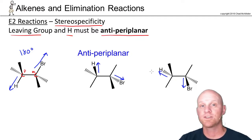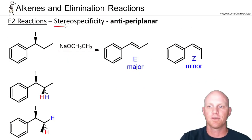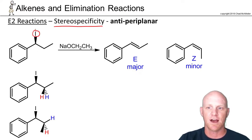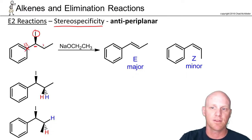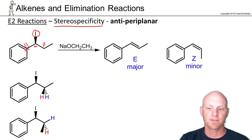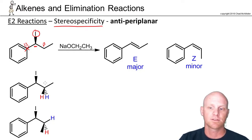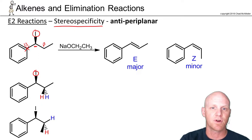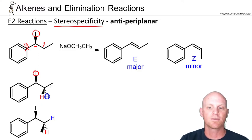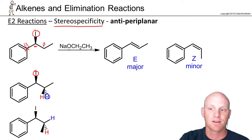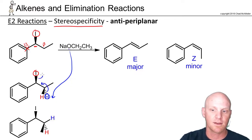This will have some profound effects on which alkenes we can form when E and Z are options. Let's use an example. Our leaving group here is iodine on a wedge pointing up. One beta carbon has no hydrogens, so we can't do elimination there. The other beta carbon has two hydrogens. With the iodine on the wedge, the hydrogen I can deprotonate must be on the dash pointing down — that's the one antiperiplanar to the iodine. Methoxide comes in as a strong base to deprotonate that hydrogen, freeing those electrons to form the pi bond and kicking off the leaving group.